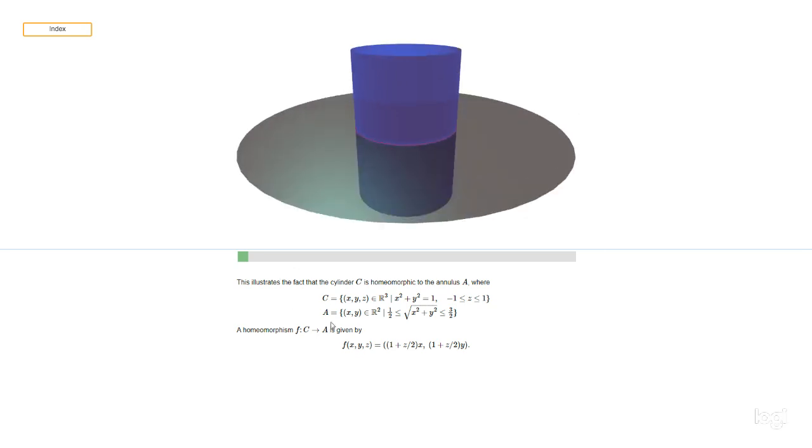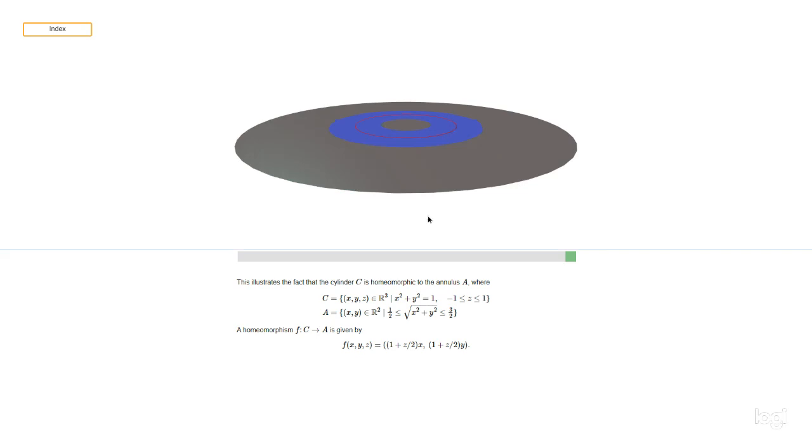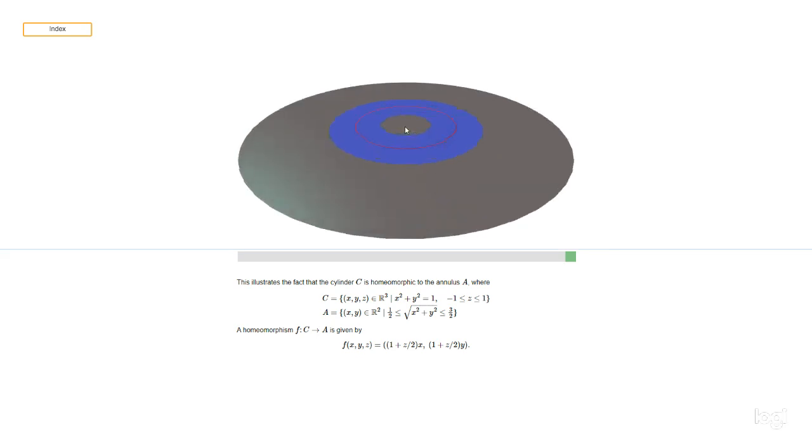Now on the other hand we're considering the annulus A, the set of points xy in R² with half less than or equal to the square root of x squared plus y squared less than or equal to three halves.